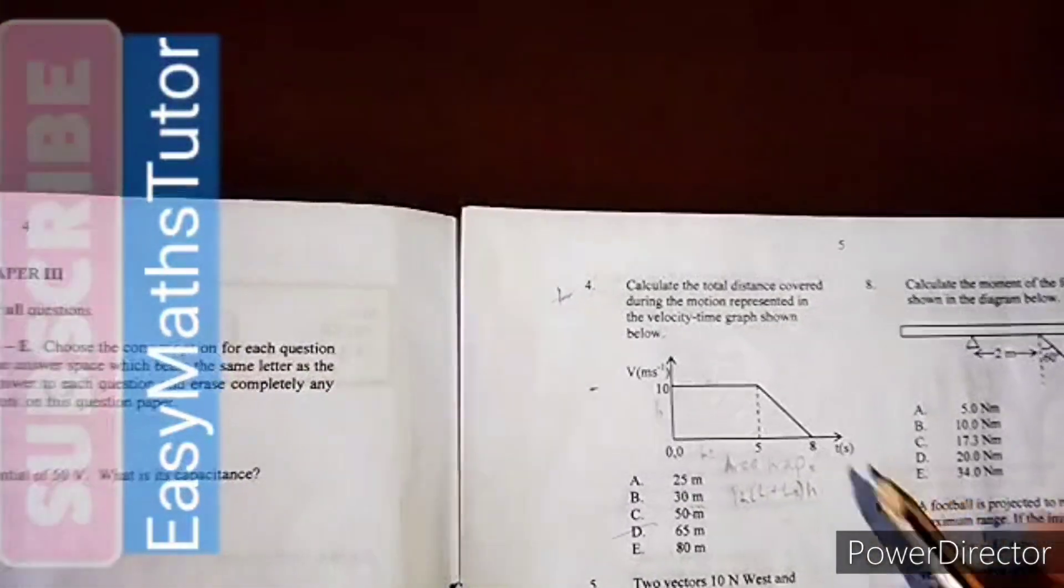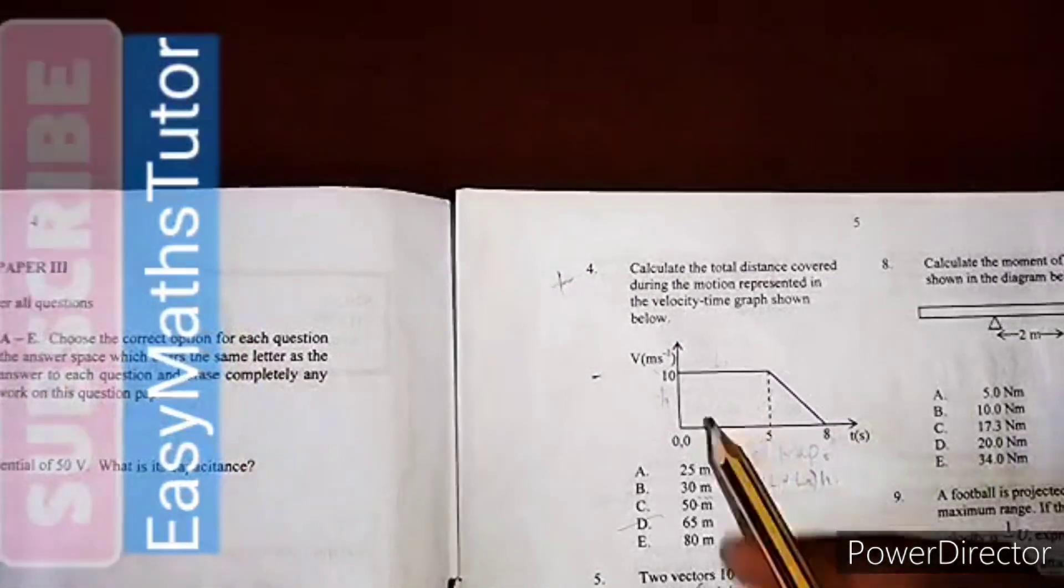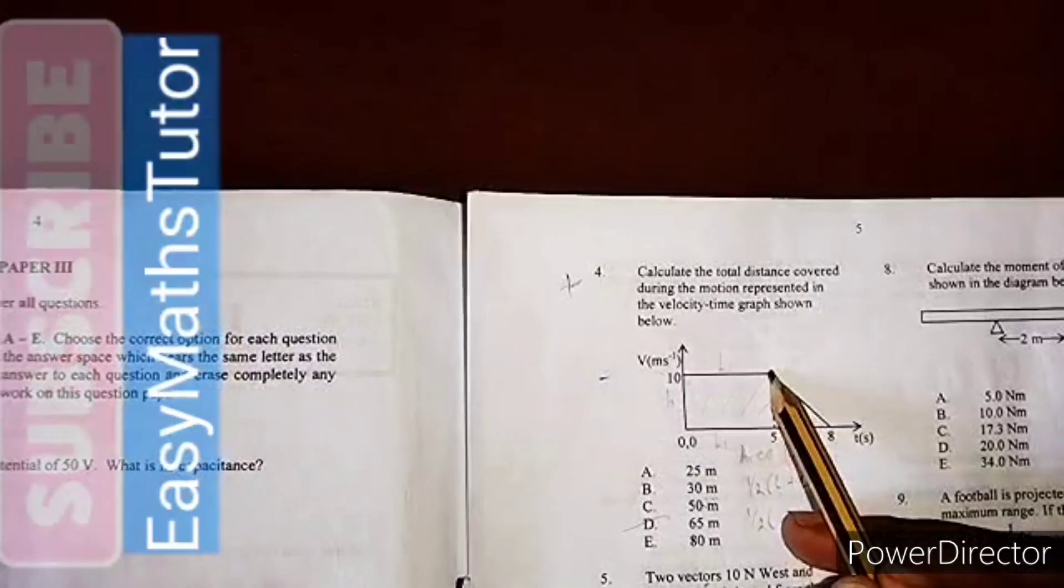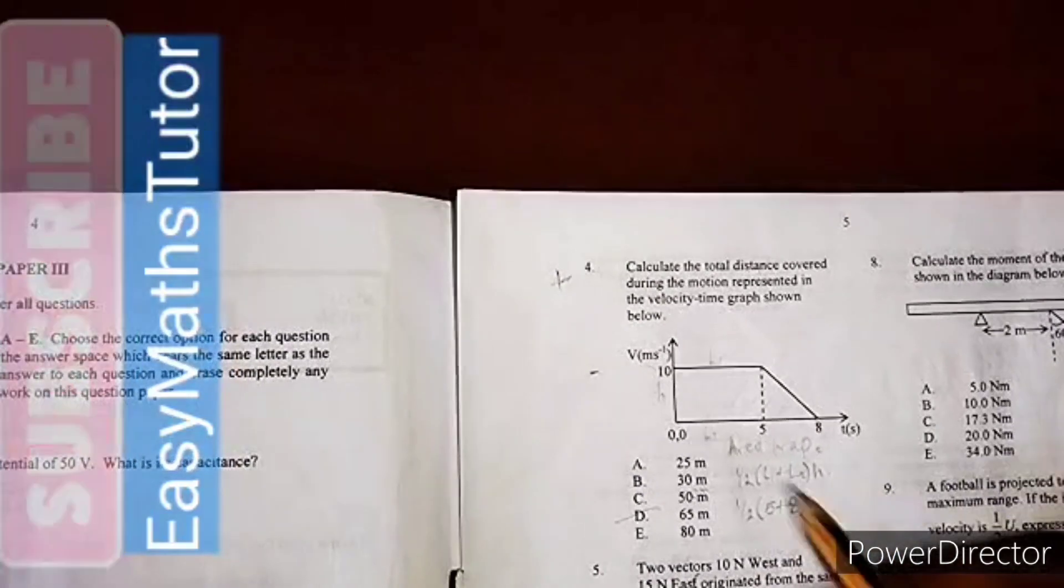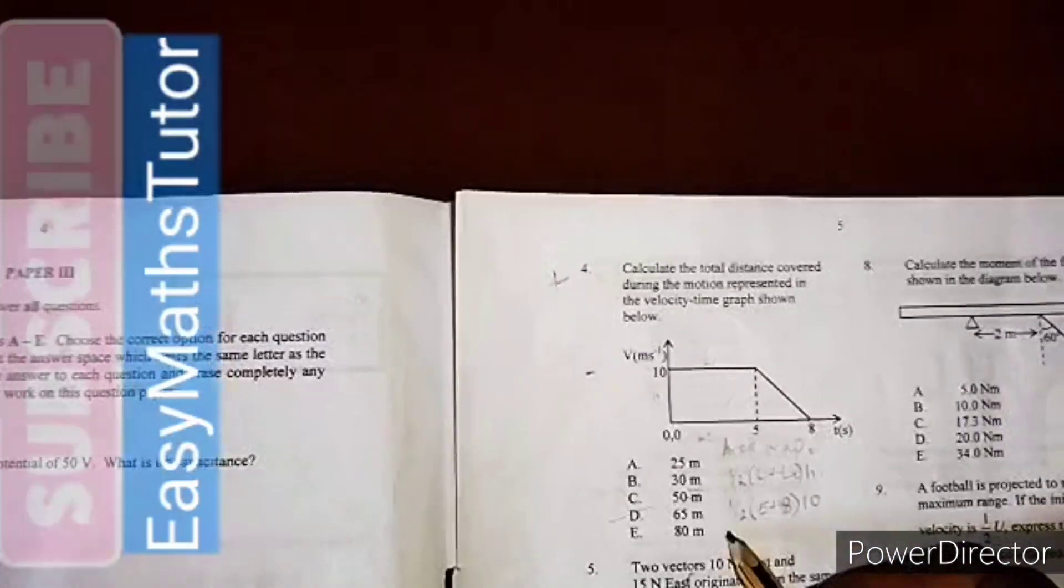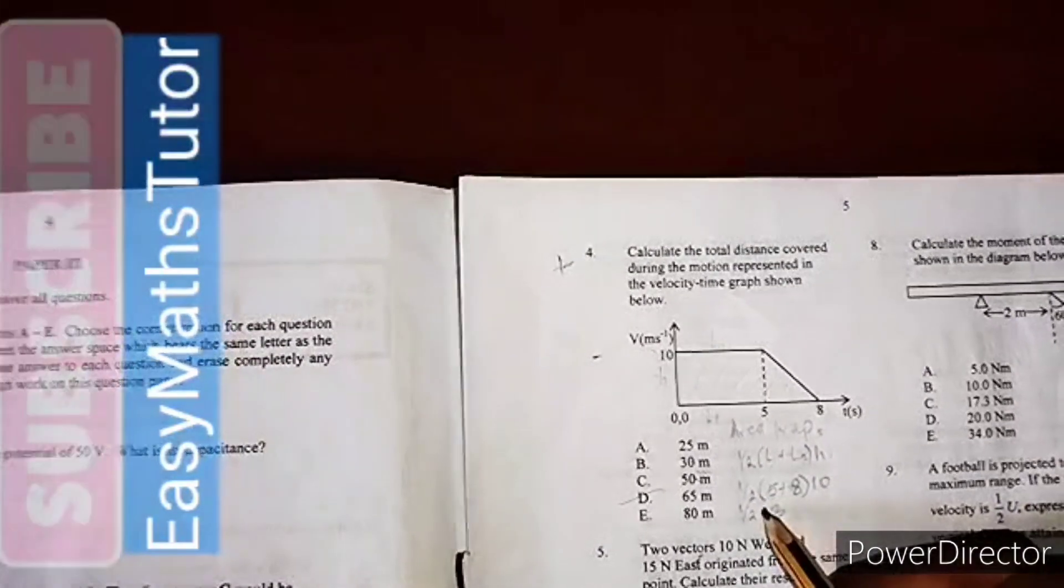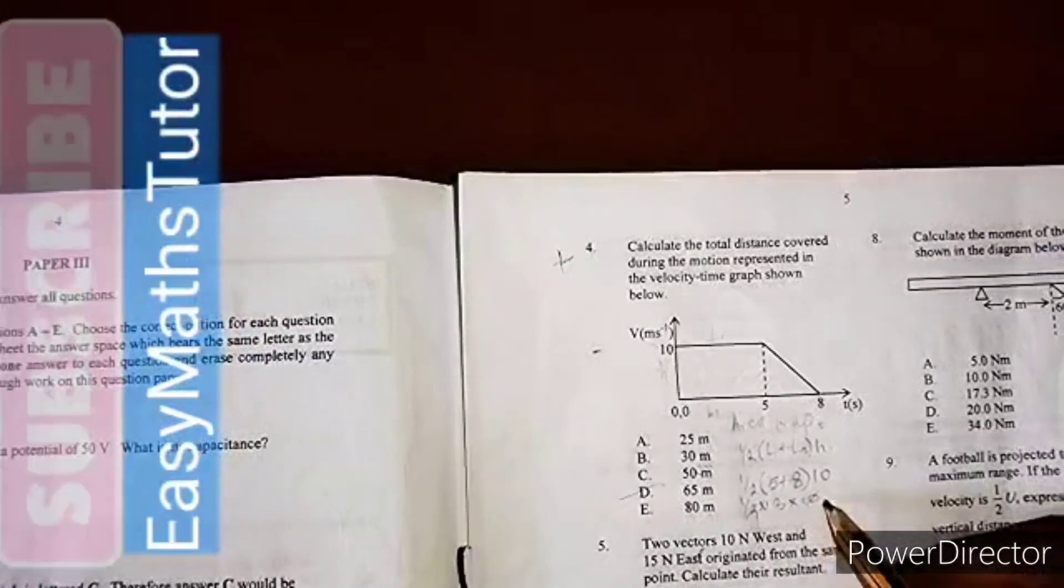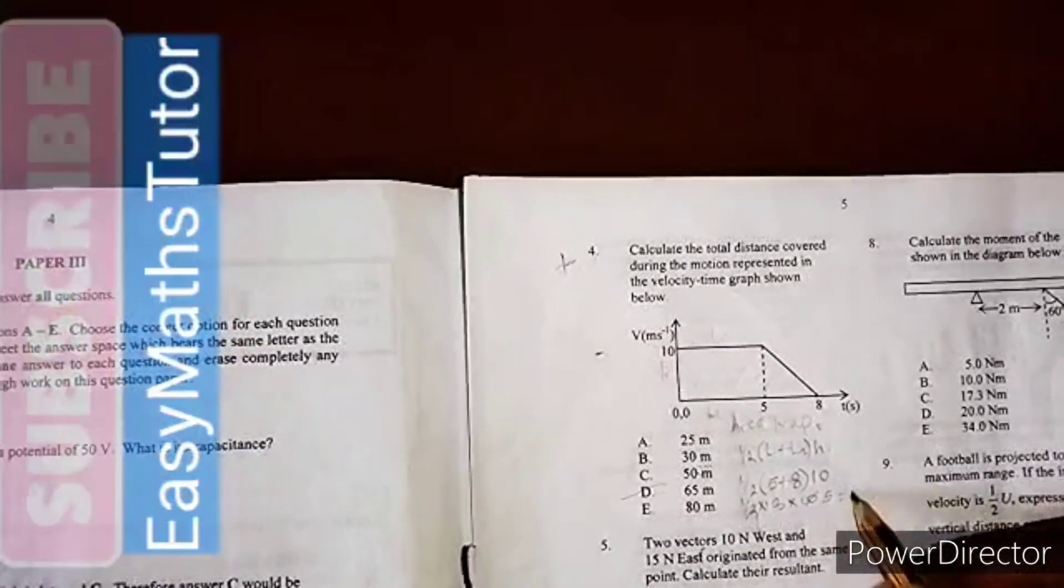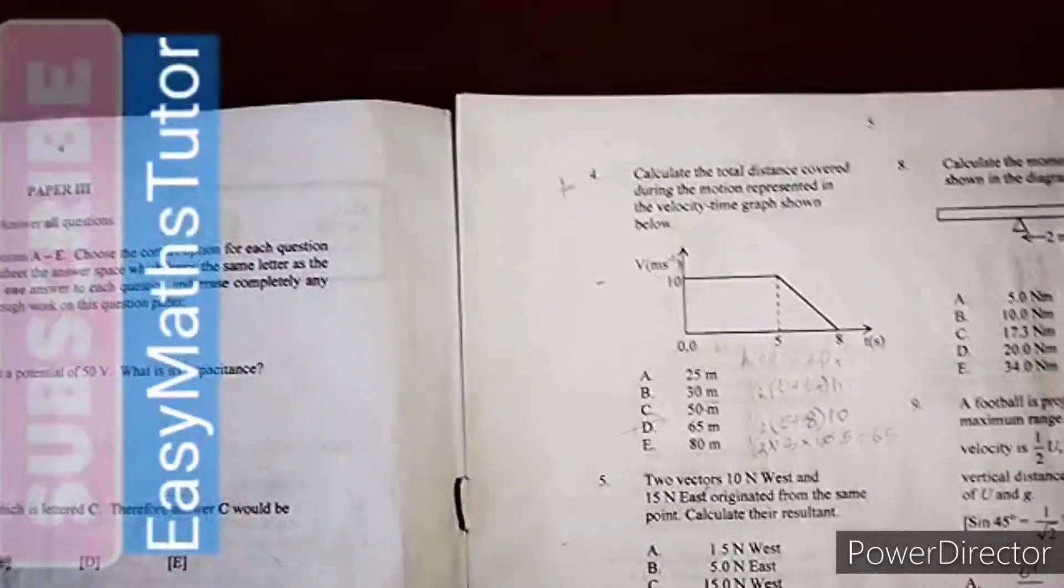According to this graph, we'll call this part L1, this part L2, and this part the height. L1 is 5, L2 is 8, and h is 10. So we have 1/2 times (5 plus 8), which gives us 13, times 10. If we cancel 2 and 10, we get 5, so 13 times 5 equals 65. Our answer is D.